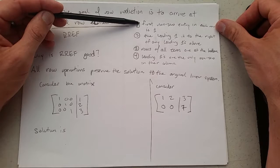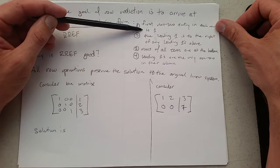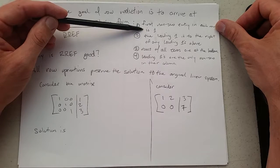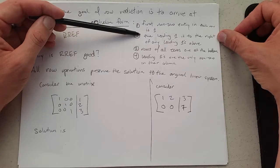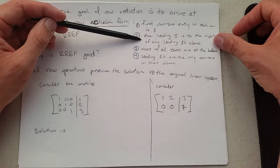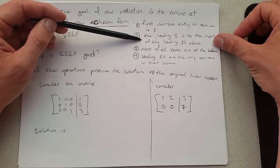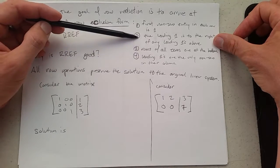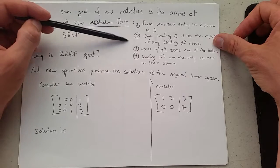The first non-zero entry in each row is 1, so that means the leftmost entry that's not 0 needs to be 1 in every row. The leading 1 is to the right of any leading 1's above it, which means it's going to go sort of like a staircase of 1's.